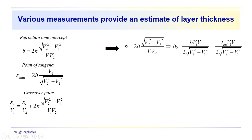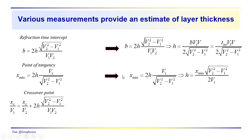We can do the same for the point of tangency, again going through the algebra: divide both sides by V1 and multiply both sides by the square root of V2 squared minus V1 squared. We end up with H equal to the minimum distance times the square root of V2 squared minus V1 squared, all over 2V1. So this is another way of calculating H, the thickness of the layer.